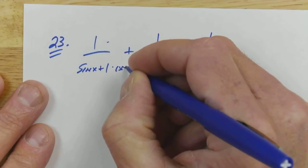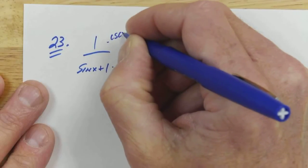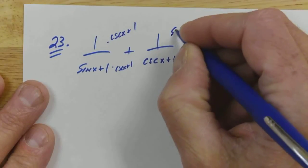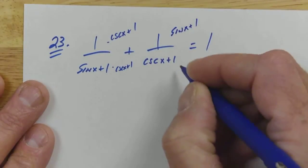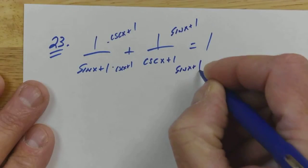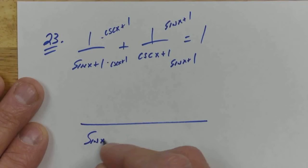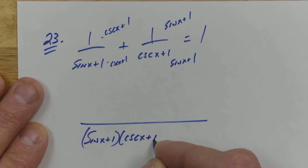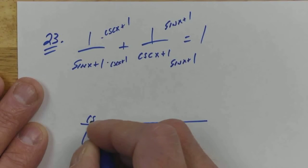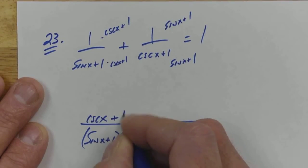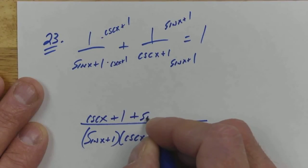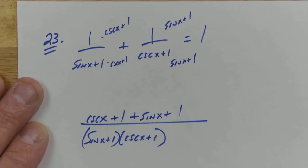I'm going to multiply top and bottom by cosecant x plus 1. I'm going to multiply top by here by sine x plus 1. So then my common denominator is just going to be simply sine x plus 1, cosecant x plus 1. And then on top we're going to get cosecant x plus 1 plus sine x plus 1.